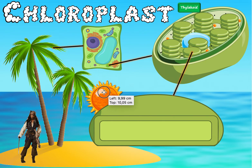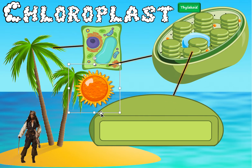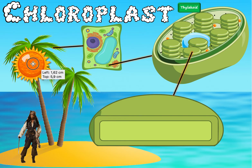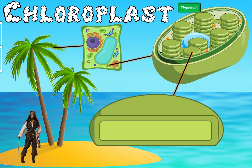The part that depends on sunlight is called the light-dependent part of photosynthesis. This is just a structure video — just know that the thylakoid is where the light-dependent part of photosynthesis happens. That's all you need to know about the thylakoid for now.